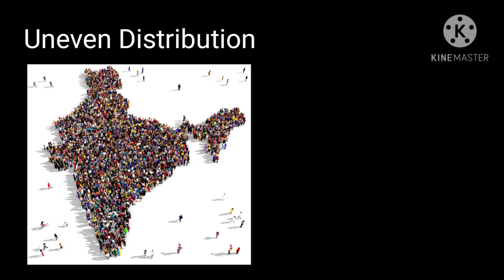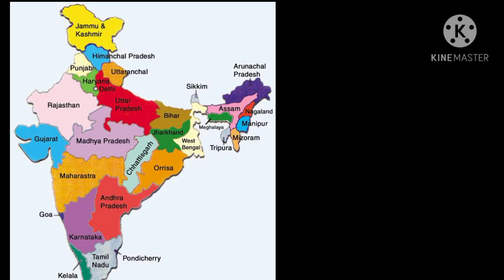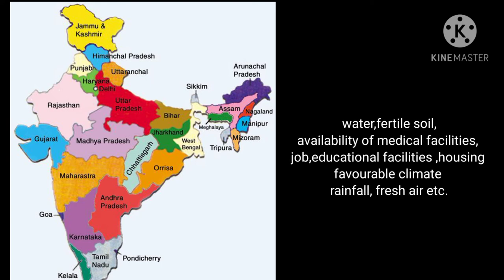There are reasons for uneven distribution. The uneven distribution of population depends on a number of factors. One of the most important factors is the uneven distribution of natural resources and wealth. Maximum population resides in areas where there is abundance of natural resources like water, fertile soil, availability of medical facilities, jobs, educational facilities, housing, favorable climate, rainfall, and fresh air.